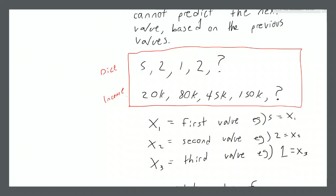Looking at those numbers, maybe we expect it to be around three-ish. When we look at the income — 20,000, 80,000, 45,000, 150,000 — we can still expect it's not going to be a three. It might be around 50,000 or 60,000. When we approximate in our heads like that, we're actually subconsciously calculating the average, or something close to the average. Intuitively, we have an idea of what it should be.